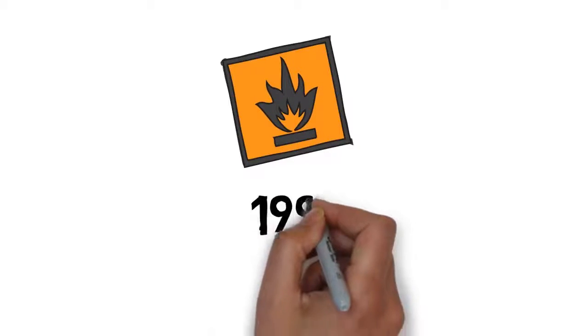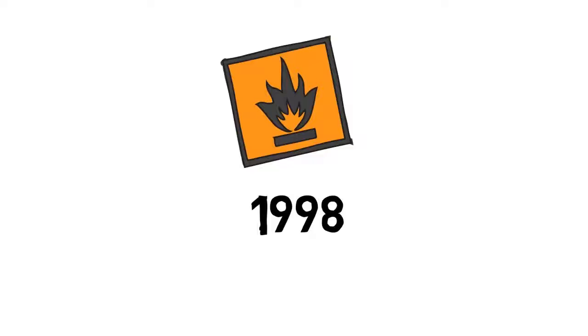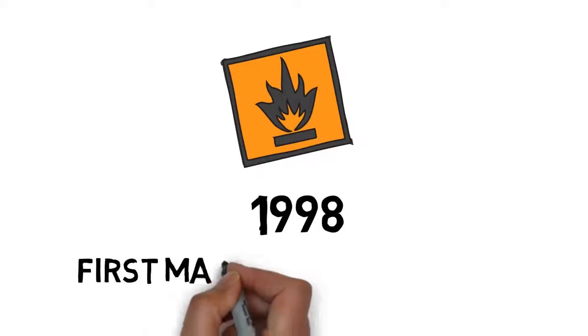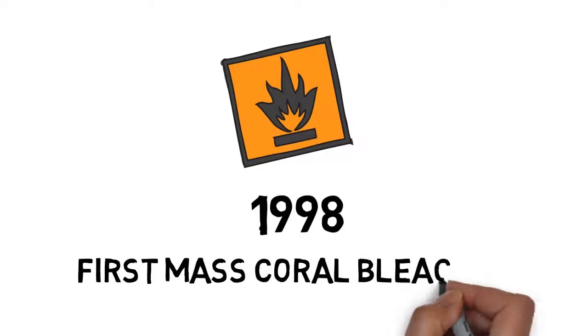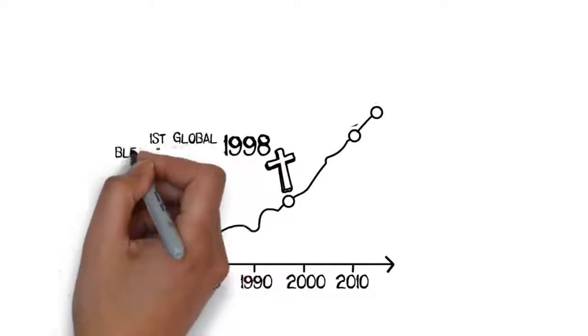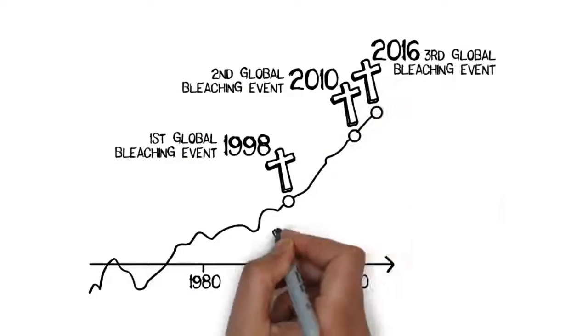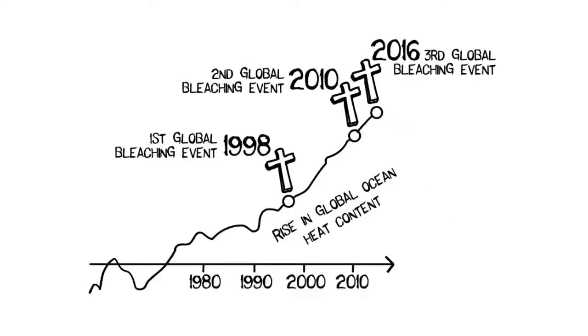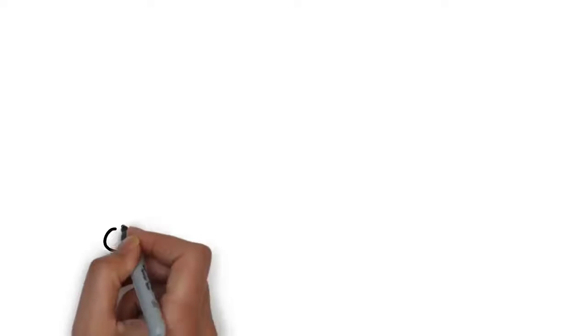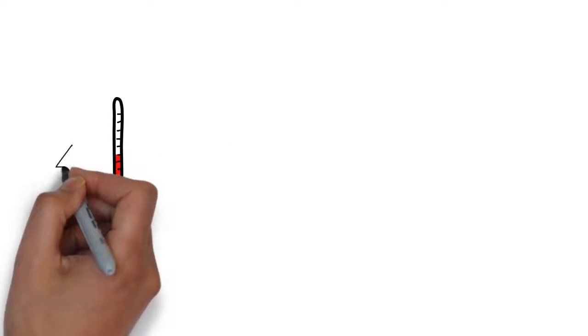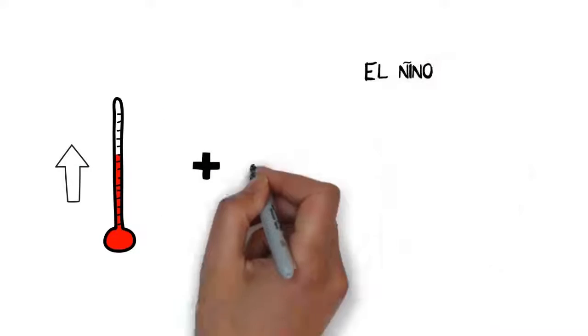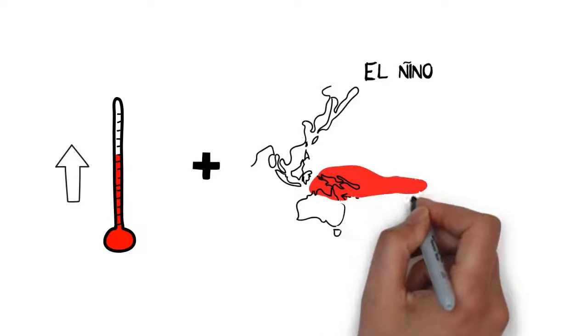However, things started to get seriously dangerous in the year 1998 with the first event of mass coral bleaching on the Great Barrier Reef. Coral bleaching events are becoming more and more frequent as a result of warming ocean due to our greenhouse gas emissions. Warmer oceans combined with El Nino events cause deadly spikes in temperature that exceed the tolerance of corals.